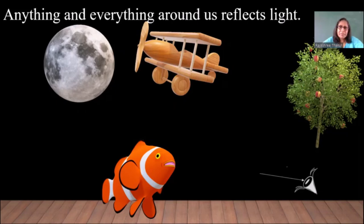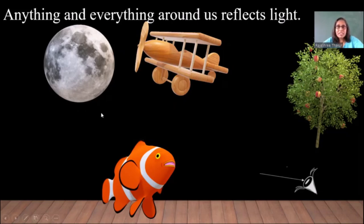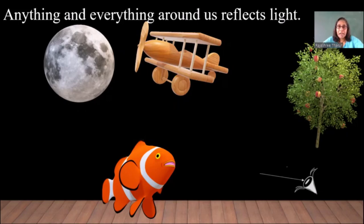But do these objects produce light? No, they don't. We understand seeing a flame of a candle because it produces light which reaches us. If we see a lighted bulb, it produces light and we see it. The sun and the stars produce light and when it reaches us, we see them. But do the moon or an aeroplane produce light? No. Then how do we see them? Because the reflected light reaches us. All objects around us reflect light — whether bright or dark — and we see them only because they reflect light.